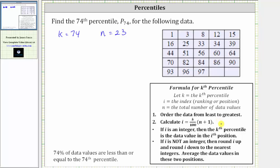Now to find the 74th percentile, the first step is to order the data from least to greatest. In our case, though, looking at the table, the data values are already in order from least to greatest in rows.